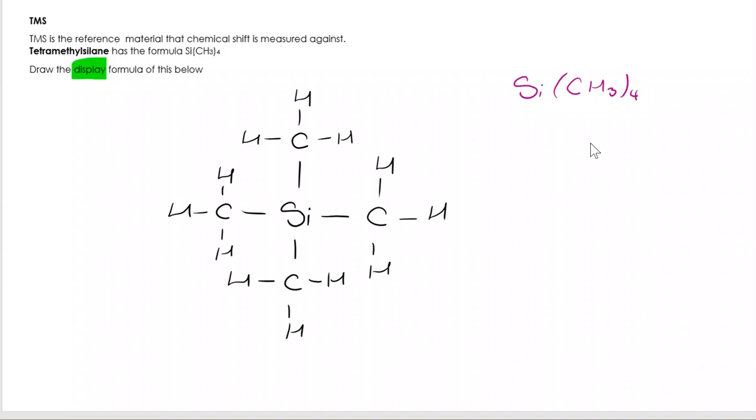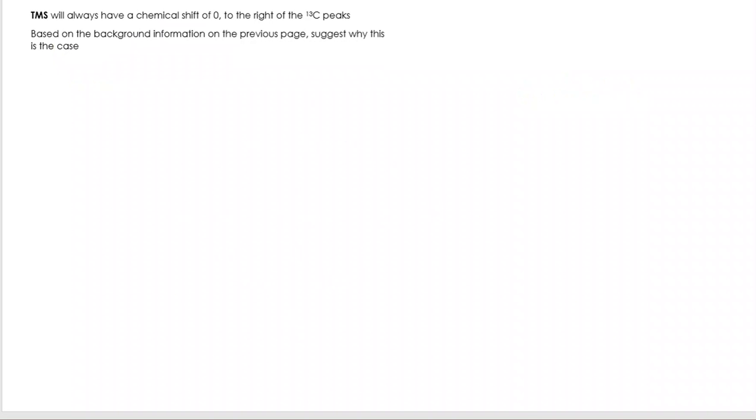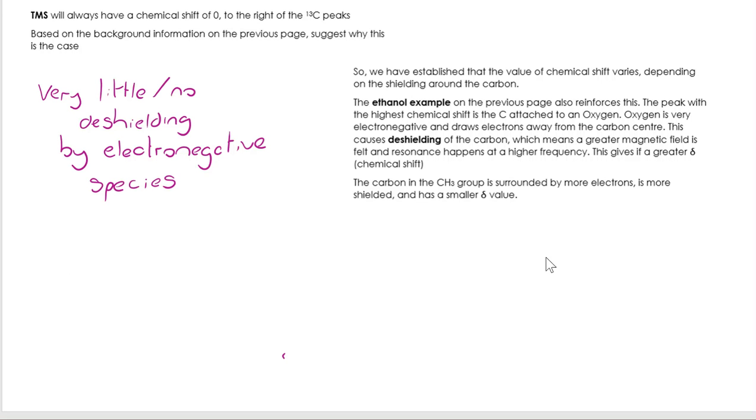TMS will always have a chemical shift of zero to the right of the carbon-13 peaks. What you're going to see here is there is very little or no deshielding by electronegative species. So this peak will always be to the right of all of the others, and for that reason it means that the peak it produces is what is then set as zero on the NMR spectra.